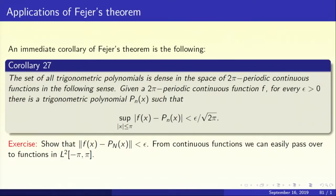Now let us look at an application of Fejér's theorem. One application is Corollary 27: the set of all trigonometric polynomials is dense in the set of all 2pi periodic continuous functions in the following sense. Given a 2pi periodic continuous function f and epsilon greater than 0, there is a trigonometric polynomial P_n(x) such that the supremum of mod f(x) minus P_n(x) over minus pi to pi is less than epsilon over root 2pi. A trigonometric polynomial is simply a finite linear combination of 1, sin x, cos x, sin 2x, cos 2x, etc.